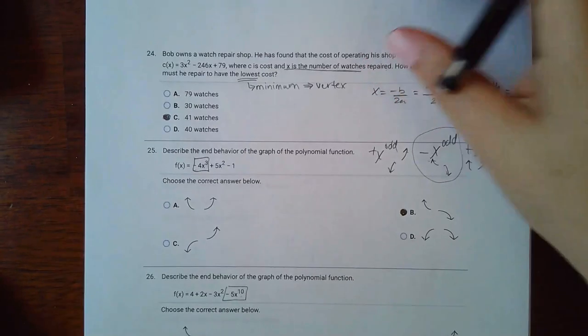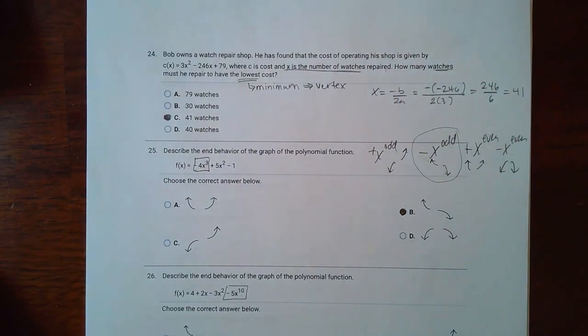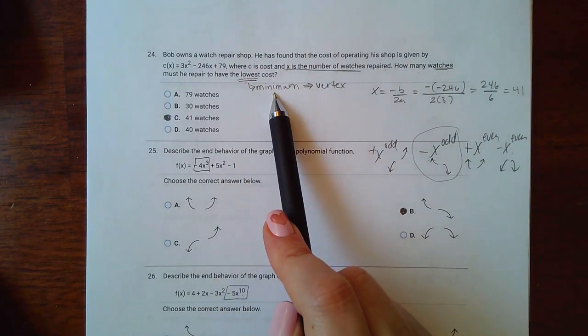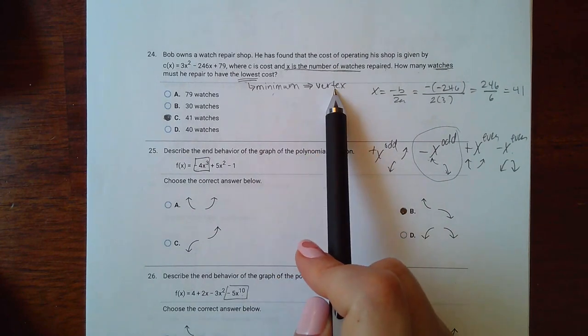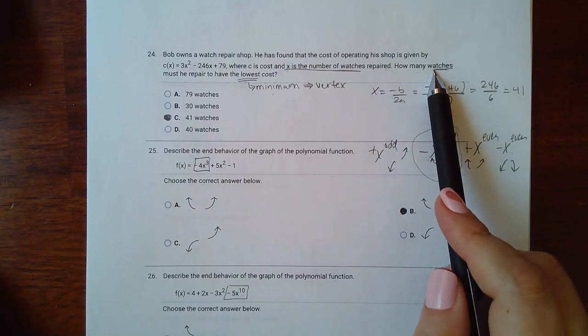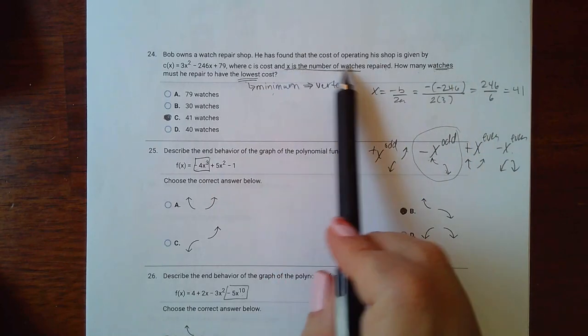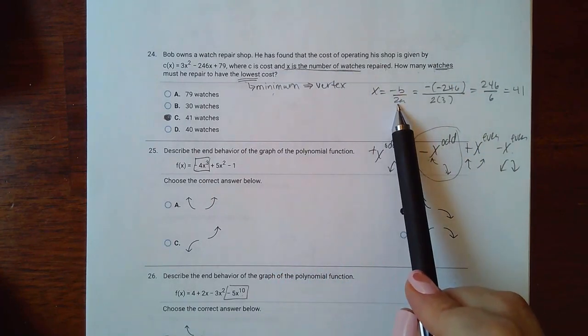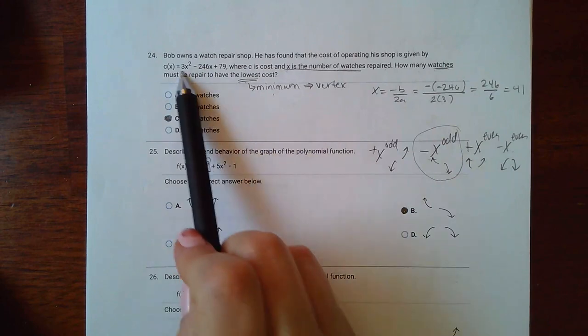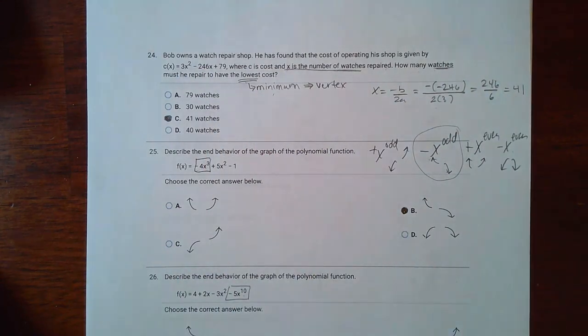Now number 24 says Bob owns a watch repair shop. He has found that the cost of operating his shop is given by c(x) equals this, where c is the cost and x is the number of watches repaired. How many watches must he repair to have the lowest cost? So lowest is another way of saying minimum and we know that minimum means the vertex. But which value are they asking me for, the x or the y, right? So it says how many watches, and watches was actually the x value. So all I needed to do was the negative b over 2a and I had the number of watches. So negative b is negative 246, a is positive 3, so we get this and then it ends up being 41 watches.